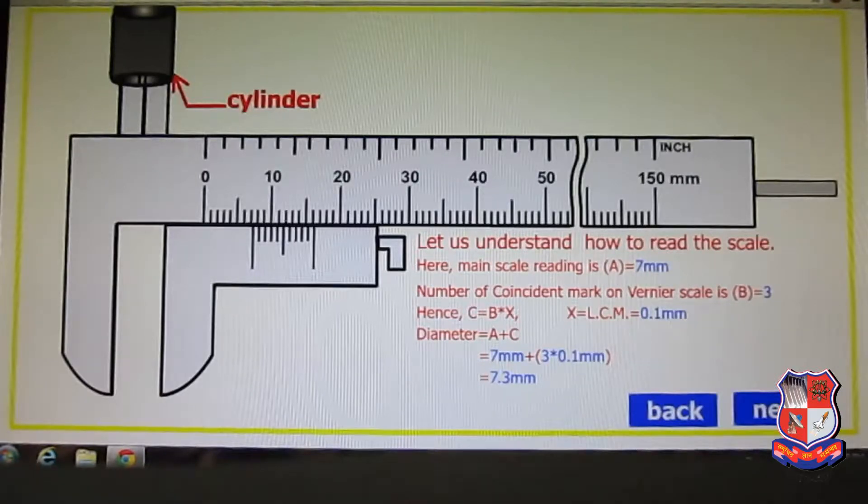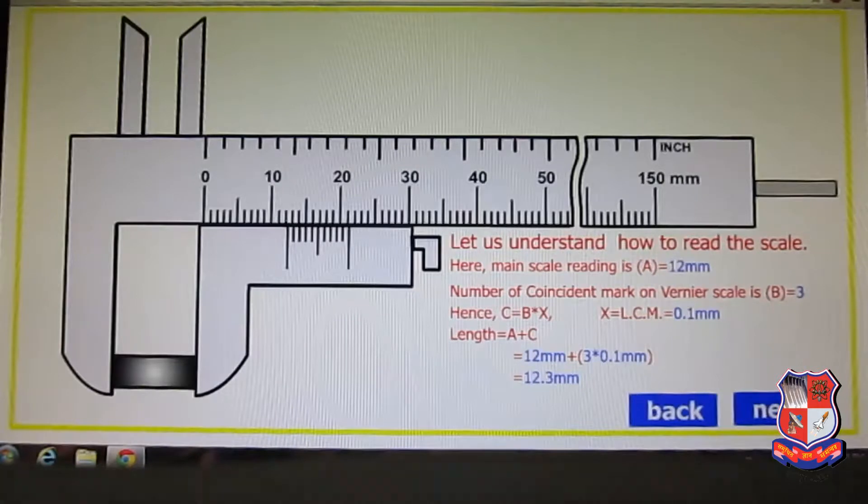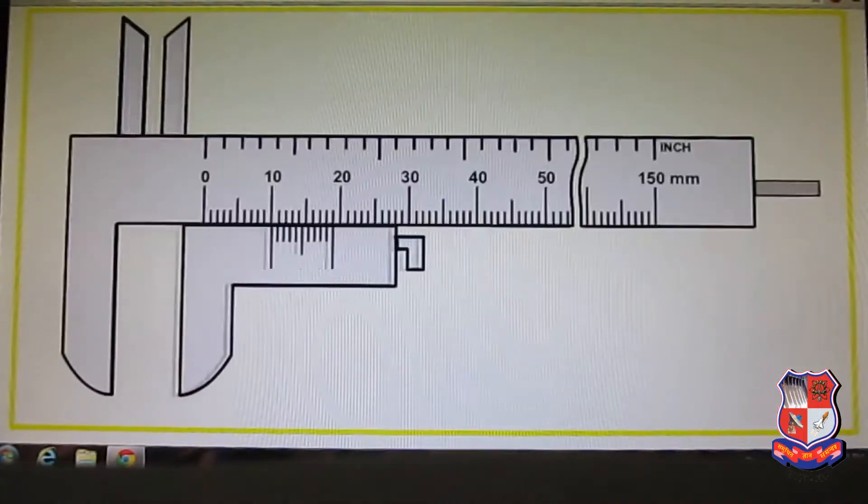Here in this case, the cylinder is here and our dimension will be 7.3mm. How? 7mm is the complete measurement and the third division is aligned with this division, so 0.3mm plus 7mm is 7.3mm.